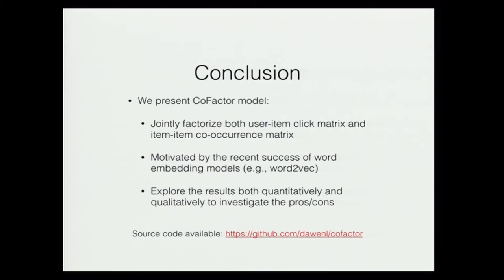In conclusion, we propose the co-factor model, which jointly factorizes both the user-item click matrix and the item-item co-occurrence matrix. This is inspired by the recent success of word embedding, specifically skip-gram word2vec. We explore results both qualitatively and quantitatively to demonstrate when it works better and why. The source code to reproduce all experimental results is available online — feel free to play with it.